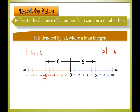If we have the absolute value of 4, then 4 is 4 units from 0, so the absolute value of 4 is 4. For the absolute value of negative 9, it is 9 units away from 0, so the absolute value of negative 9 is 9.